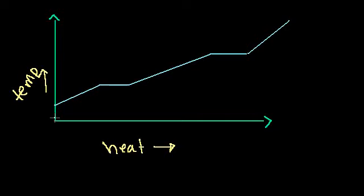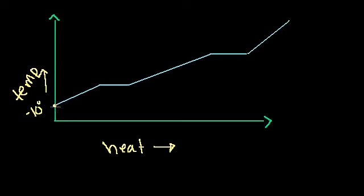A couple of videos ago we learned that if we start with solid water or ice at a low temperature — say minus 10 degrees Celsius — and we add heat energy, the temperature goes up. The molecules, while in that ice lattice network, just start vibrating and their average kinetic energy increases until we get to 0 degrees Celsius, which is the melting point of water.